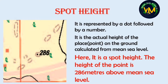First, spot height. It is represented by a dot followed by a number, and it is the actual height of a place or a point on the ground calculated from sea level. So in the exam if they ask you what is this dot 286, the answer is: it is a spot height where the height of the point is 286 meters above mean sea level. The words 'spot height' as well as 'above mean sea level' are very important.